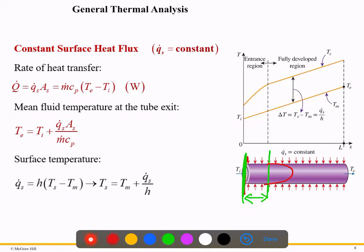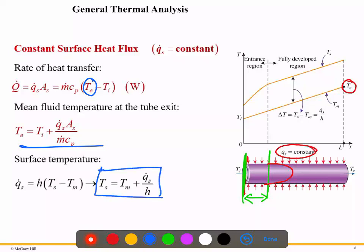To calculate the exit temperature under constant surface heat flux conditions, you apply the formula and do simple modifications to solve for the exit temperature T. You can also calculate the surface temperature Ts using the corresponding formula. You do not need to derive everything, but you should know how to get the exit temperature and the surface temperature for the constant heat flux case.